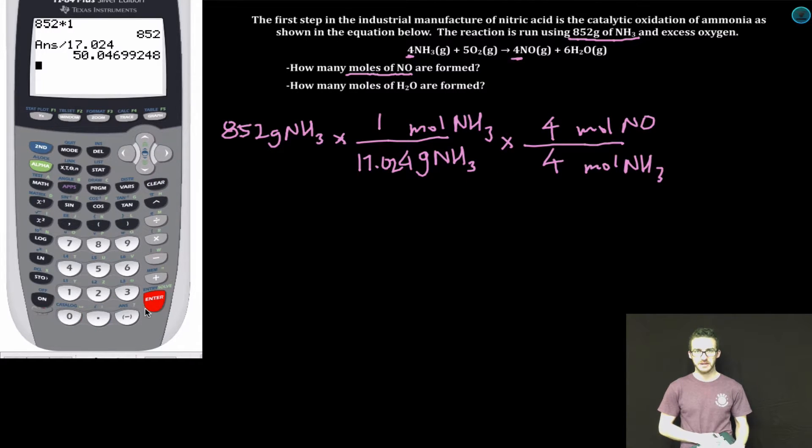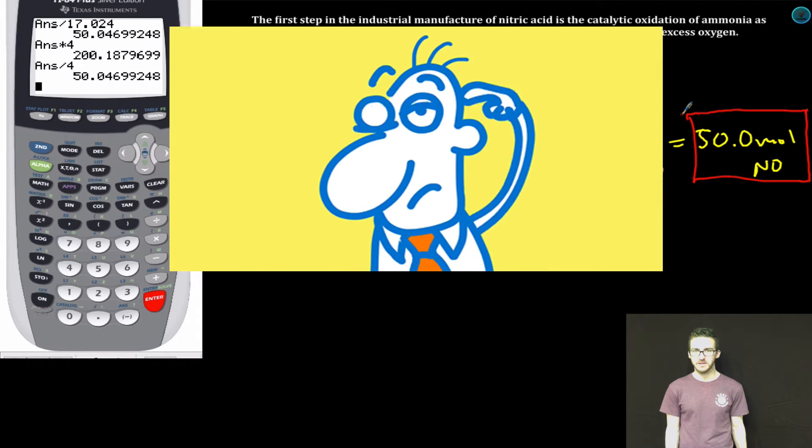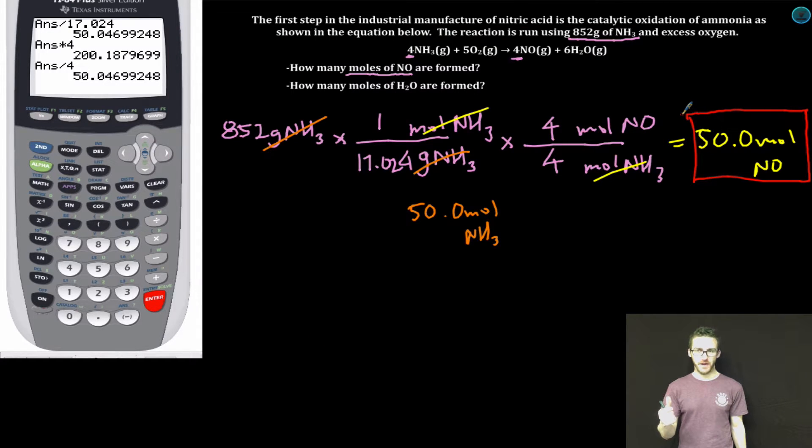Calculator time. I'm going to pause right here. I've just solved for my number of moles of NH3. I've just gone this far in the dimensional analysis. Let's keep going. So my number of moles of NO, 50.0. Again, stop. Think. Do I have the correct number of sig figs? Yes.